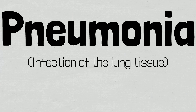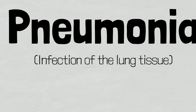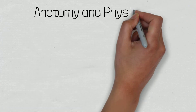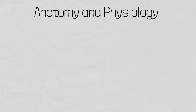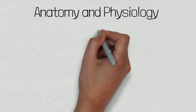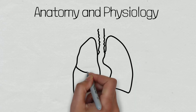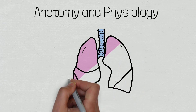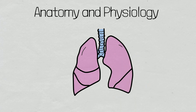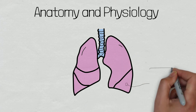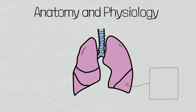Before we look at the pathophysiology of pneumonia, let's go over some basic anatomy and physiology. Alveoli are the functional aspects of lung tissue that are responsible for the gaseous exchange of oxygen and carbon dioxide.